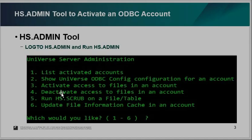Inside the hs.mn tool, there are a couple of options to list and activate the ODBC account and show the ODBC account, or you can deactivate. When you have some file that has additionally changed, you want to run hs.sql command. Option 6 will recreate the .hs_file_info cache file. When you add a new file, you need to run that command or use the menu GUI interface.